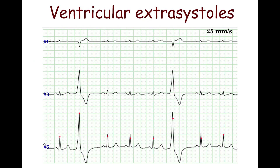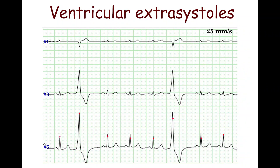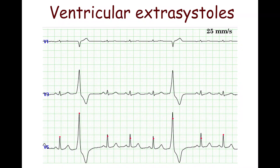Premature ventricular complexes, or ventricular extrasystoles, arise from an ectopic focus within the ventricles. The QRS complex is wide with abnormal morphology and is usually not preceded by a P-wave. There are discordant ST-segment and T-wave changes: ST-segment depression and negative T-waves in leads with a dominant R-wave, and ST-segment elevation and positive T-waves in leads with a dominant S-wave.